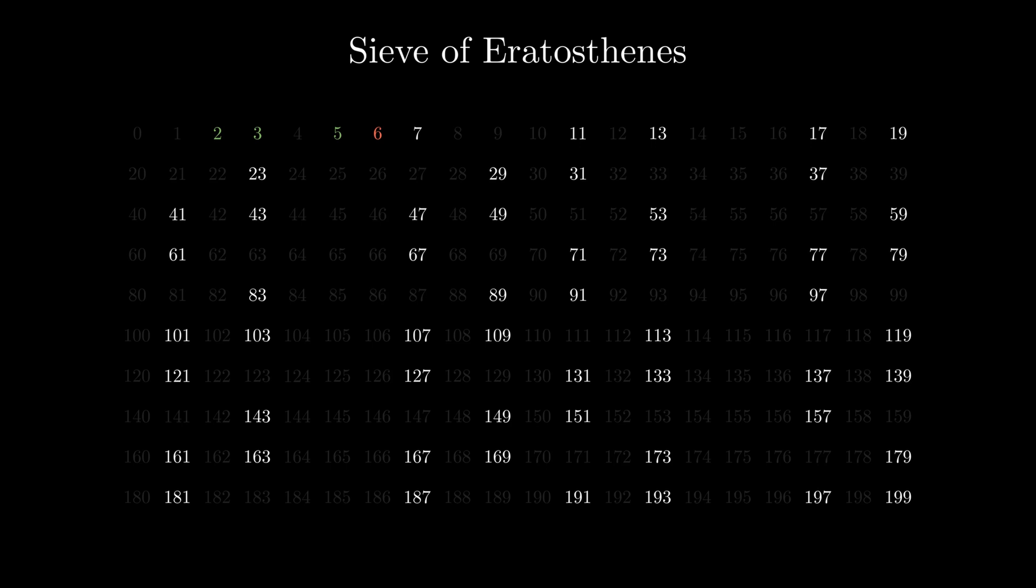We will then skip 6 as it was marked as non-prime number when we were processing the number 2. This way we can continue the process until we reach the largest number.